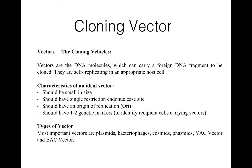For a DNA molecule to act as a vector, it should have the following qualities: first, the ideal vector should be small in size; it should have a single restriction endonuclease site; it should have an ORI — that is, an origin of replication; and it should have one or two genetic markers which are used to identify recipient cells carrying vectors.